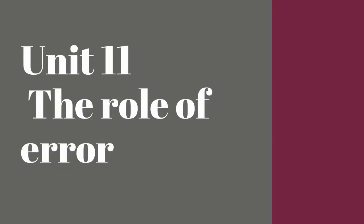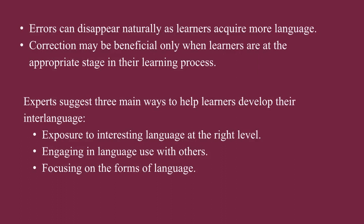Unit 11: The Role of Error. Developmental errors and errors of interference can disappear by themselves, without correction, as the learner learns more language. In fact, correction may only help learners if they are ready for it — i.e. they are at the right stage in their individual learning process. But experts believe that learners can be helped to develop their interlanguage. There are three main ways of doing this: firstly, learners need exposure to lots of interesting language at the right level; secondly, they need to use language with other people; and thirdly, they need to focus their attention on the forms of language.